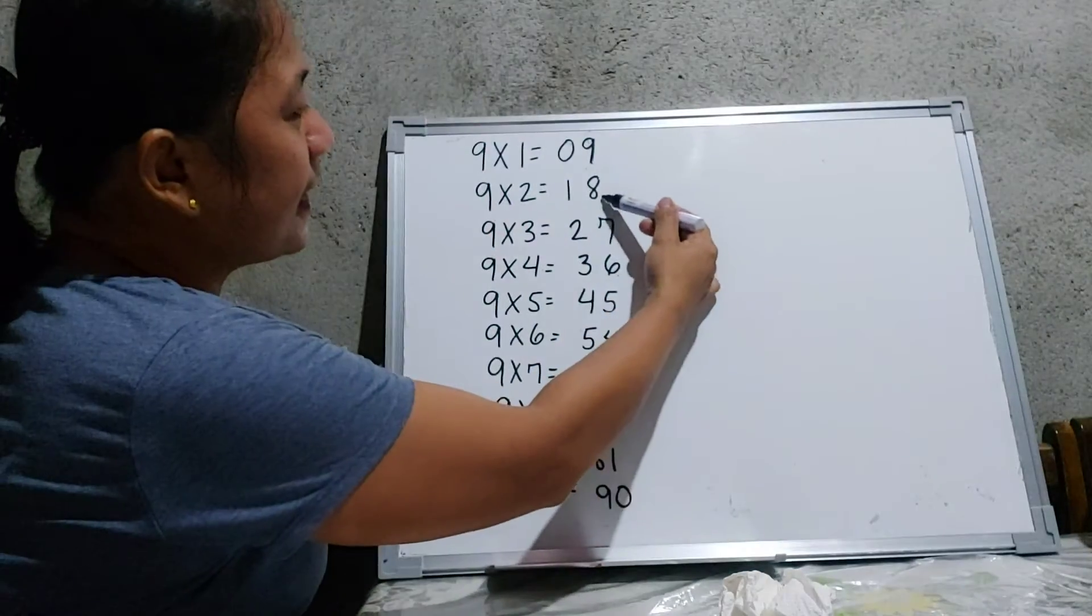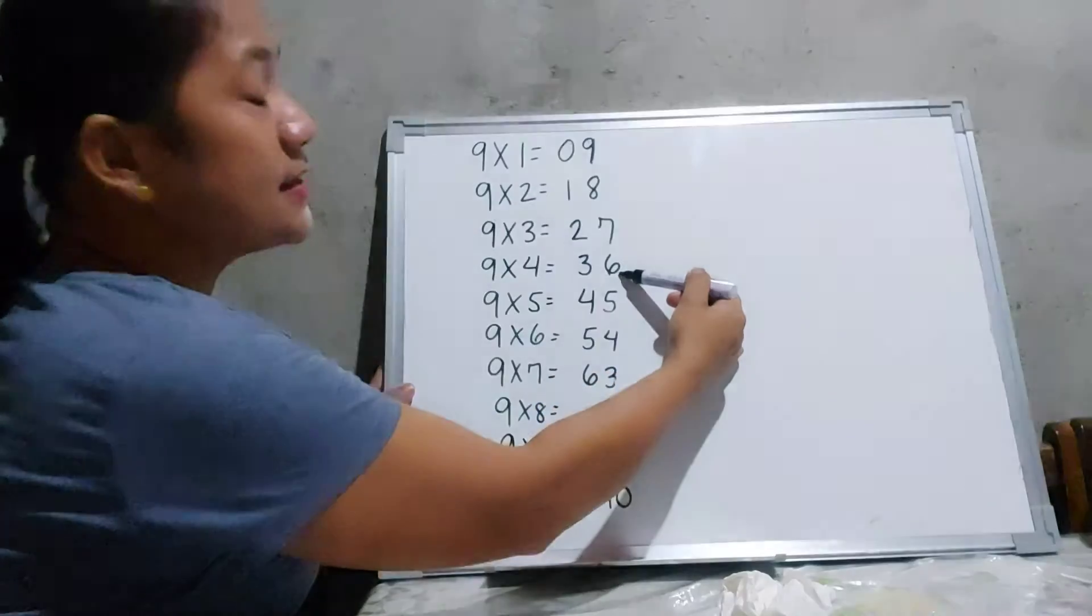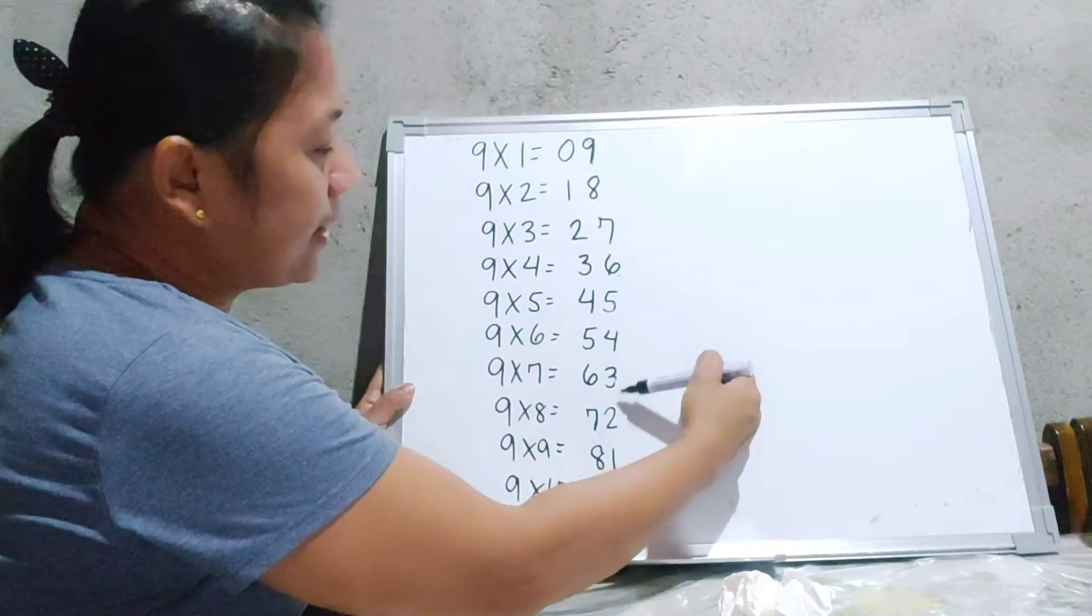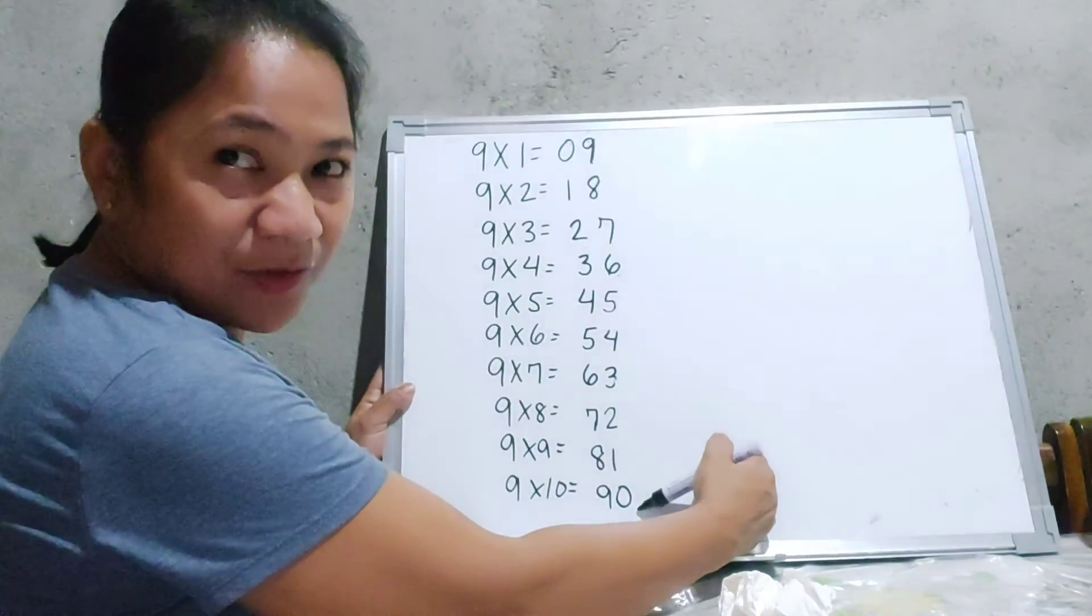So we have 9, 8, 7, 6, 5, 4, 3, 2, 1, and 0.